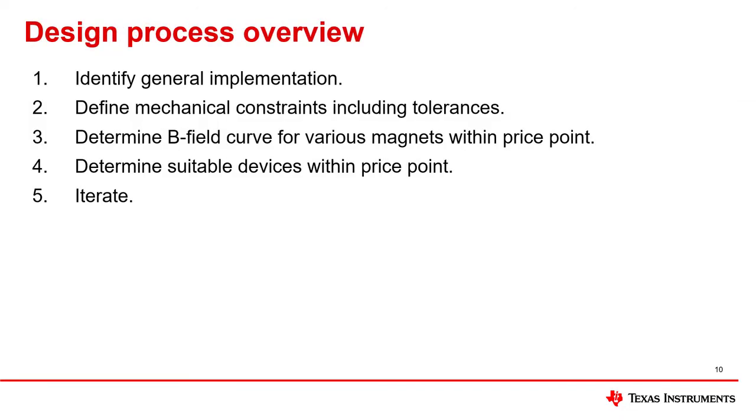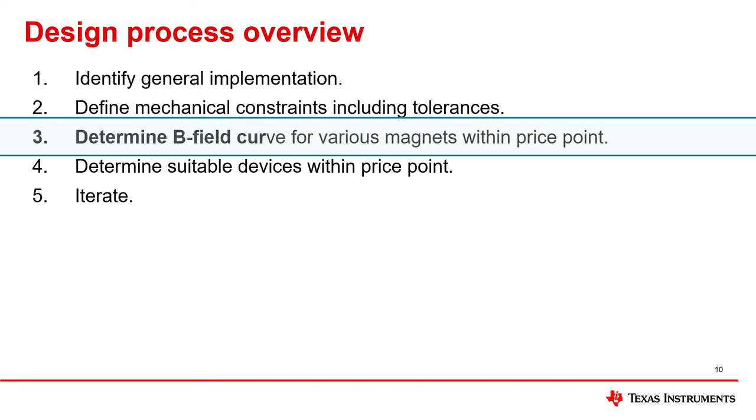After specifying our mechanical constraints, we now have a tangible path to take in selecting the components needed to create the position feedback system. The first component we will examine for the position feedback system is the magnet.